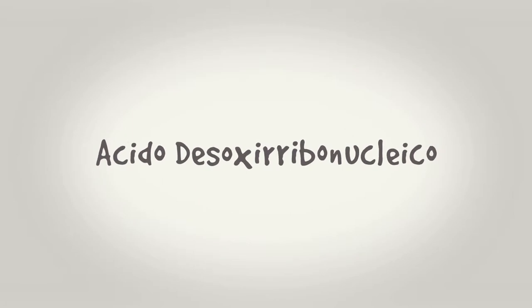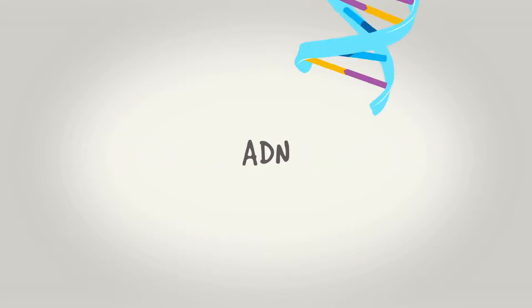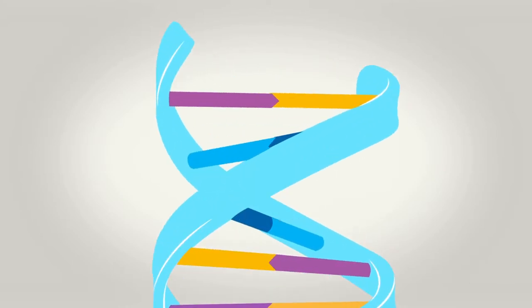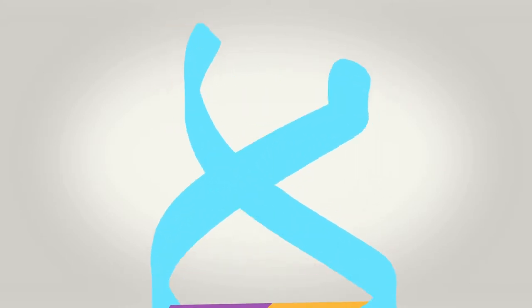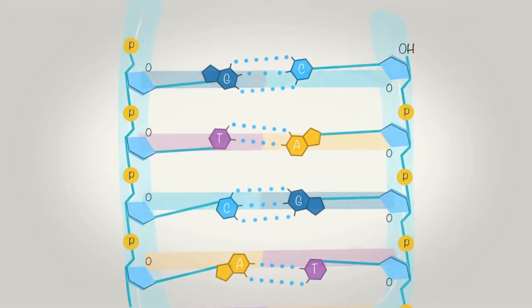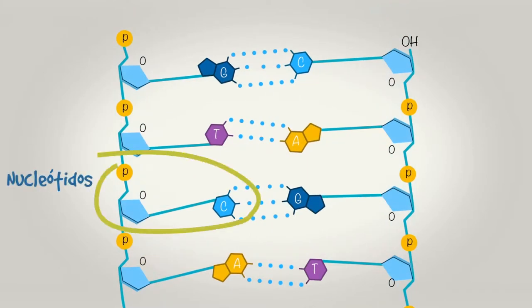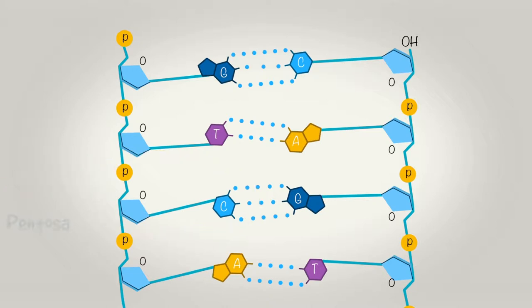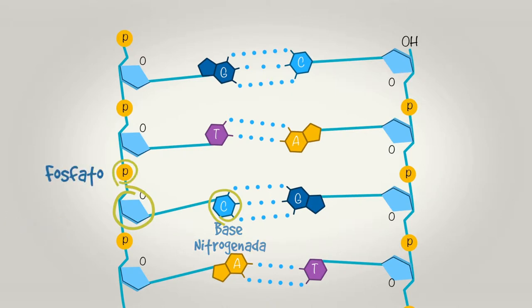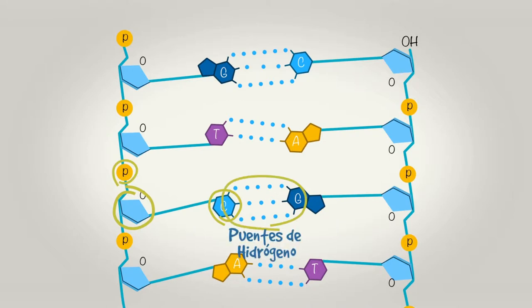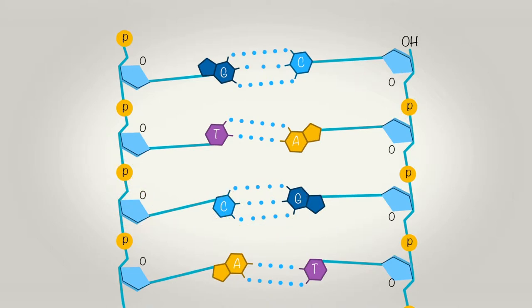El ácido desoxirribonucleico, o ADN, es la molécula que porta toda la información genética de manera codificada, formada por monómeros de nucleótidos que pueden alcanzar grandes polímeros en cadenas formadas con millones de estos. Dichos polímeros, hechos de pentosas, nucleótidos y grupos fosfato, se encuentran en dos cadenas unidas a través de los puentes de hidrógeno que ocurren en las bases nitrogenadas. Esto hace que la molécula se entrelace, dando como resultado la doble hélice.